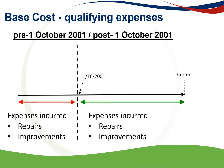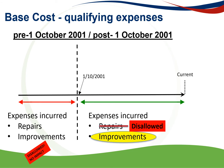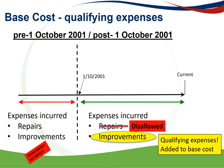Base cost qualifying expenses for assets purchased pre-1 October 2001: expenses incurred, for example repairs or improvements, will be disallowed and have no impact because you will have to use the valuation date value, which will either be the market value, time apportionment base cost, 20% rule, or other exception. For assets purchased on or after 1 October 2001, repairs won't be an allowed base cost item. Improvements, however, will be allowed as qualifying expenses that will be added as part of the base cost.